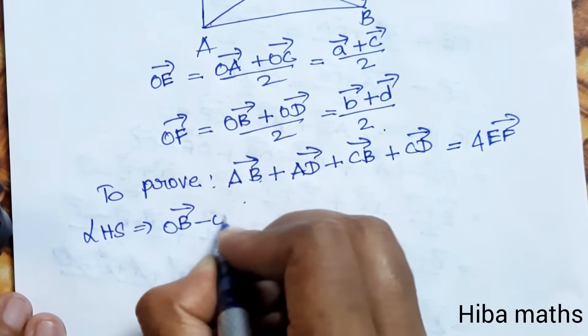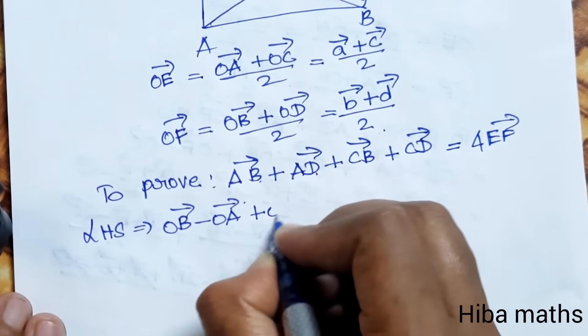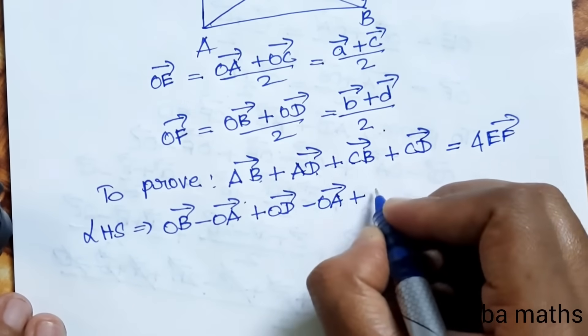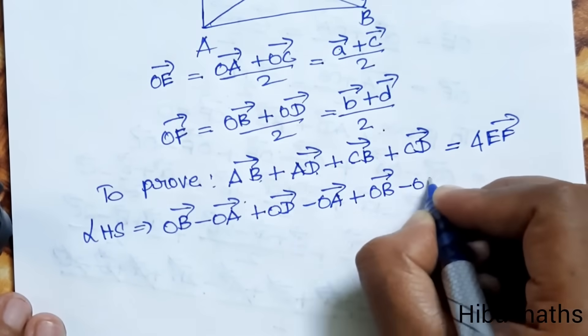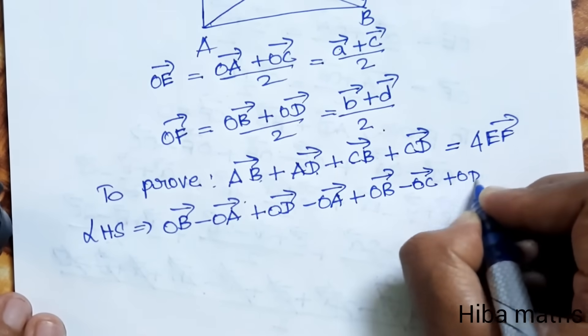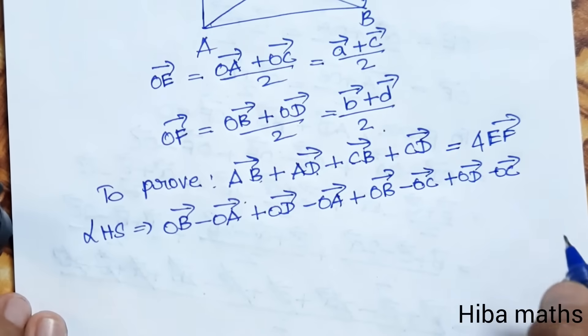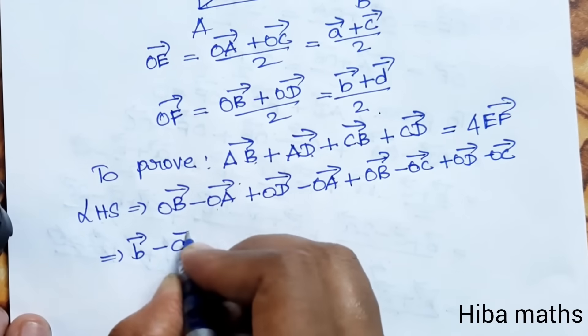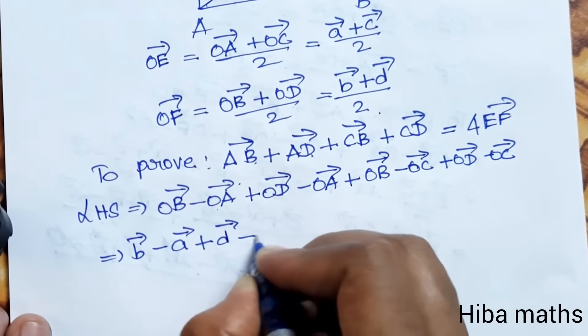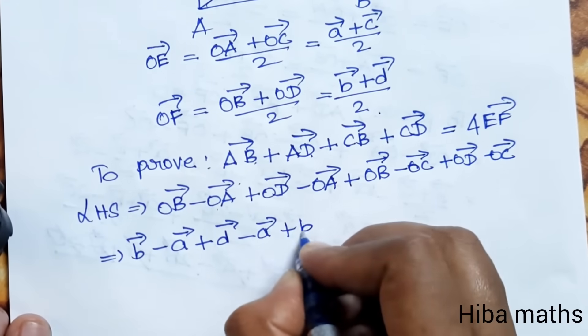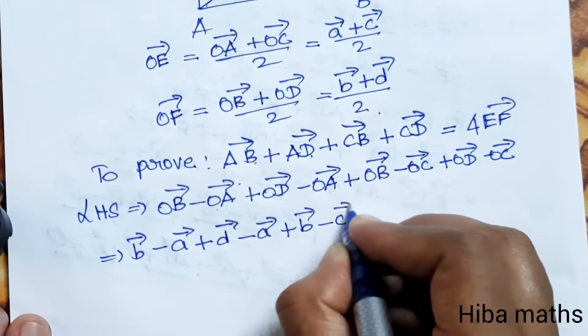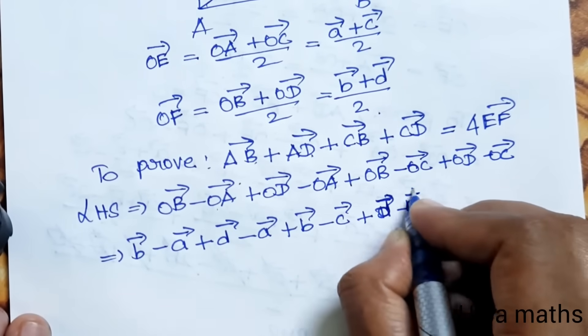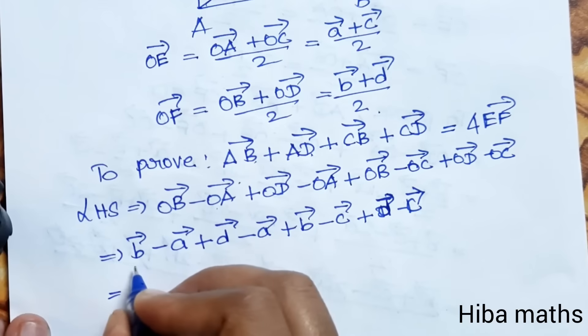LHS equals OB vector minus OA vector plus OD vector minus OA vector plus OB vector minus OC vector plus OD vector minus OC vector.